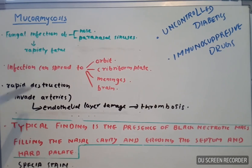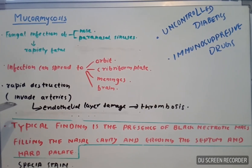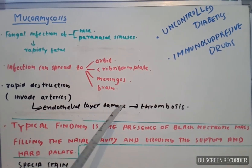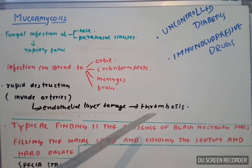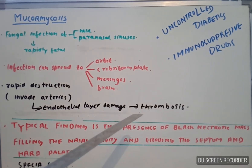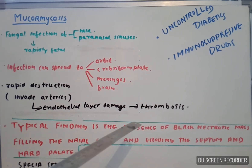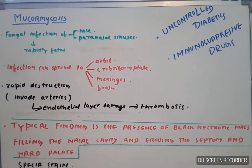There is rapid destruction. How does this destruction happen? First, the fungi invade the artery, and after that, they damage the endothelial layer and lead to thrombosis. If thrombosis is created, the blood supply is cut off and it becomes rapidly fatal.